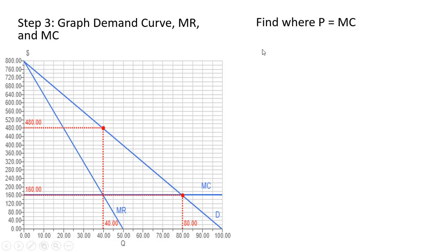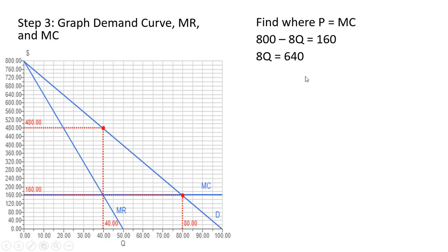To find deadweight loss, we need a bit more information: where price equals marginal cost, which is the competitive outcome. Setting the inverse demand 800 minus 8q equal to the constant marginal cost of 160, and solving for q by dividing through by 8, we get q equals 80. That's where the 80 on the graph is coming from.